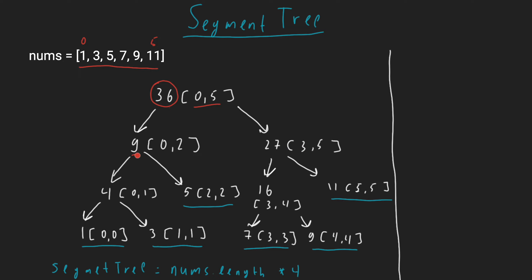For the node covering index 0 to 2, its left subchild is the sum from 0 to 1 and the right subchild covers index 2 to 2. At the bottom of our segment tree we have all our initial elements from the nums array — for example, element at index 0 is 1, index 1 to 1 is the first element, and so on. We recursively build up our segment tree, storing it in a segment tree array of size 4 times our initial array to accommodate all nodes.